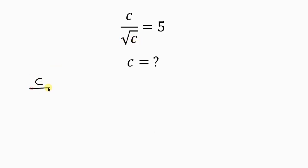So on the left, I have C over the square root of C. Now I'll multiply the left by the square root of C equal to, on the right, I have 5. I'll also multiply the right by the square root of C.